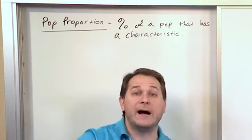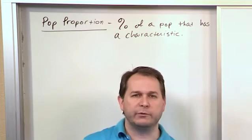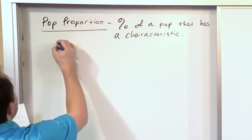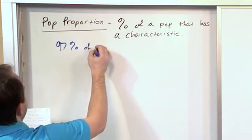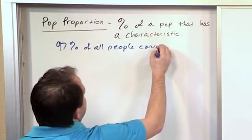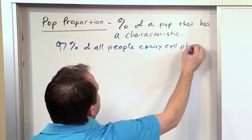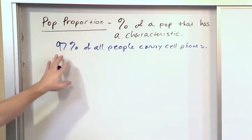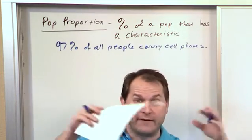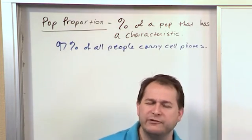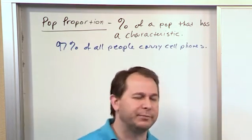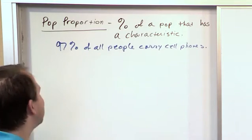Remember, we're talking about population proportion. So whatever population you're studying — which is a large collection of people or things — a population proportion might be, for instance, 97% of all people carry cell phones. That is a population proportion. The proportion would be the 97% of all the people, meaning everybody in your population. So when you see a percentage, it's definitely going to be referring to what we call a proportion. You know it's a population proportion because it's referring to all people — in that case, a very large group.